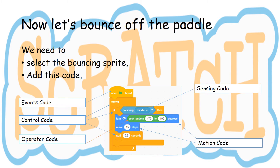So now let's bounce off the paddle. We need to select the bouncing sprite and add this code. It's got an events code — when the green flag is clicked, something will happen. I've got three control codes: a forever, an if, and a wait. I've got an operator code which is pick random 170 to 190 degrees. I've got sensing code which says if touching the paddle. And I've got motion code which is turn, plus pick random with the operator code, and move 15 steps.